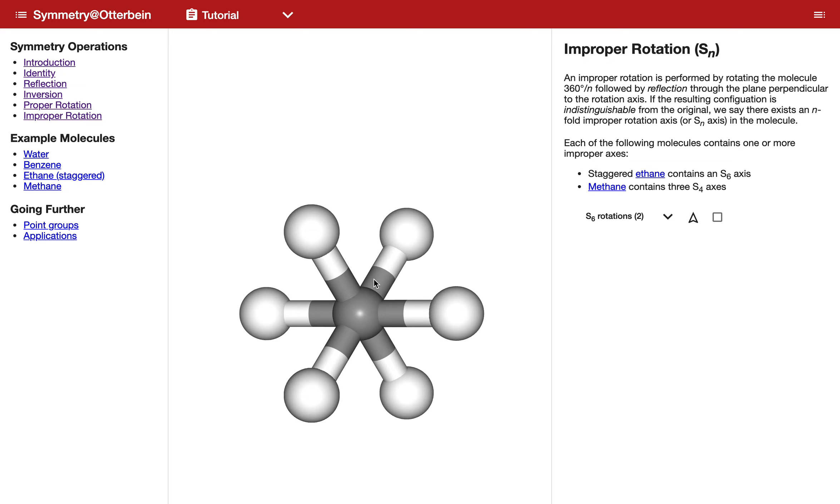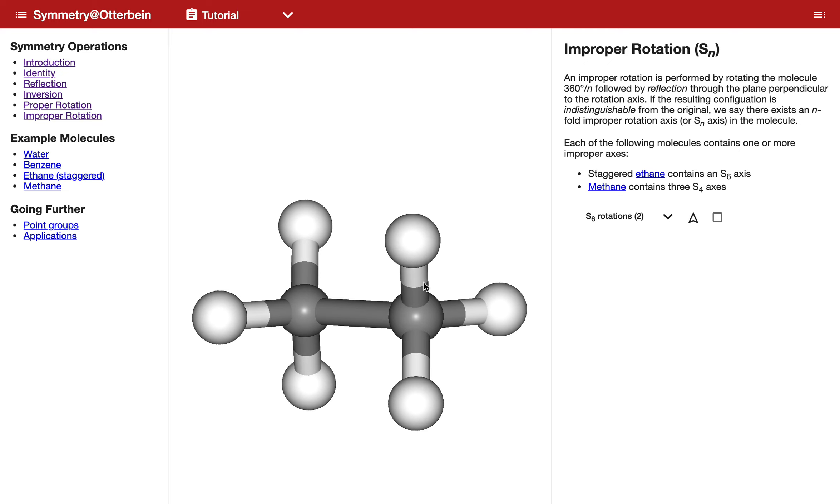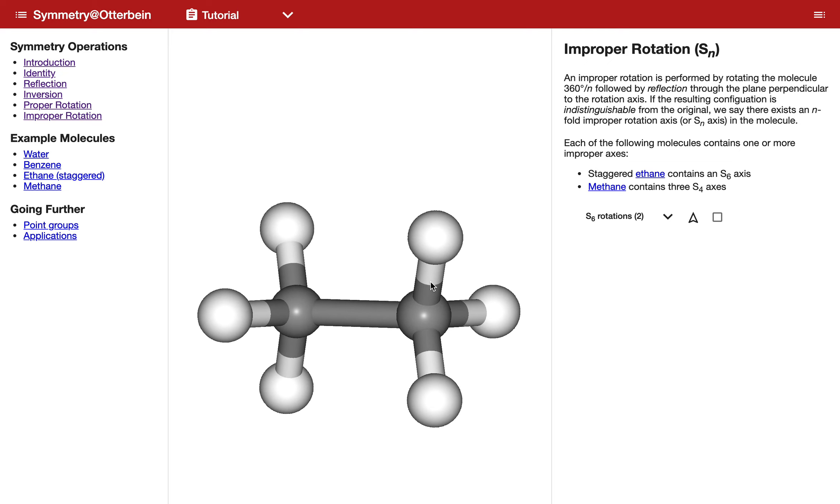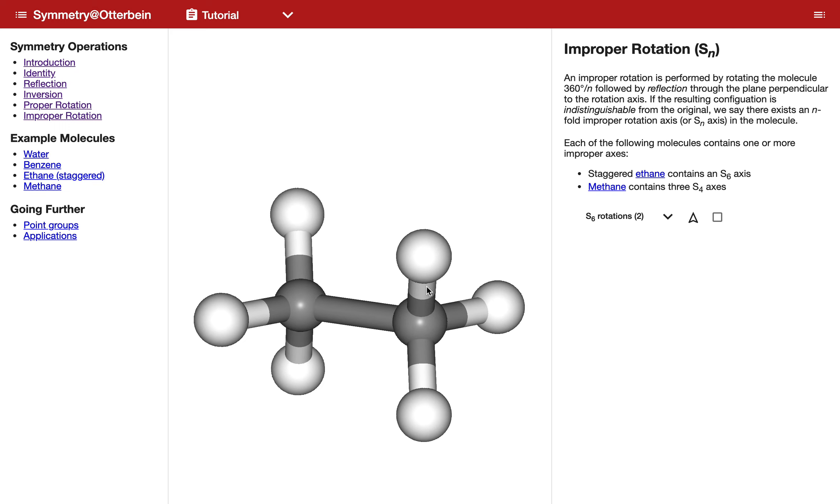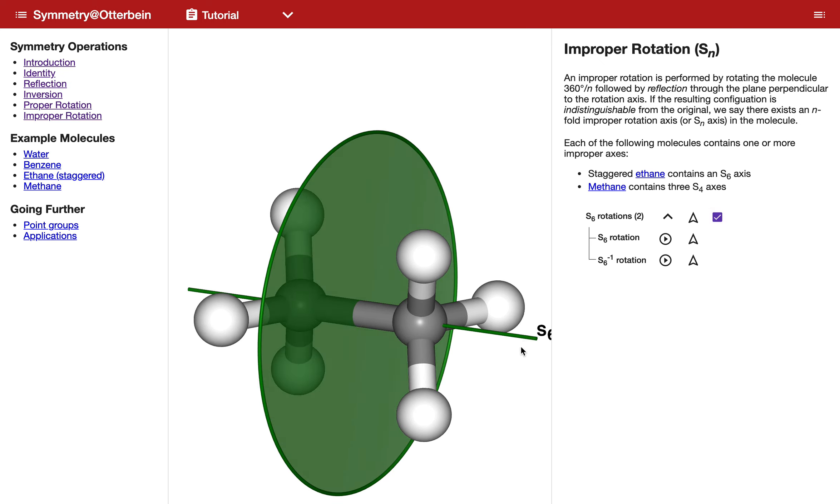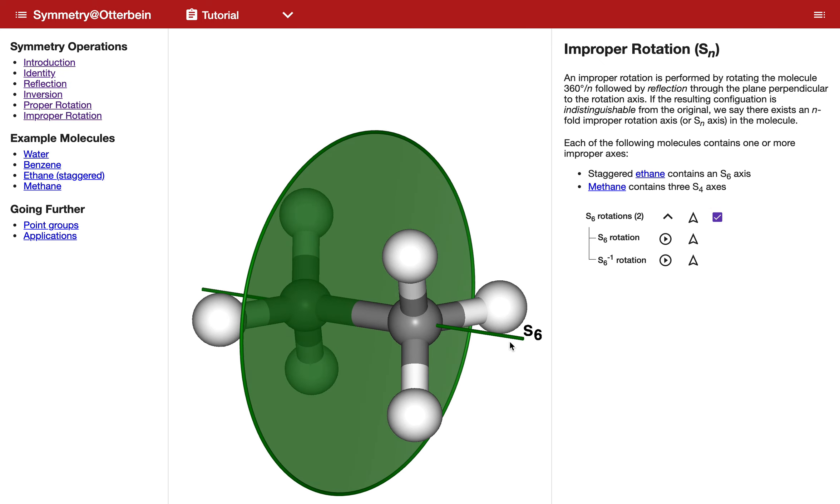Finally, let's look at improper rotation. Again, we have ethane as our example. So what does improper rotation look like in this molecule? Let's first go down. You can see there's two different operations that correspond to this. If I look at the reflection, you'll see that two things are noted here, two elements: I have an axis and a plane.